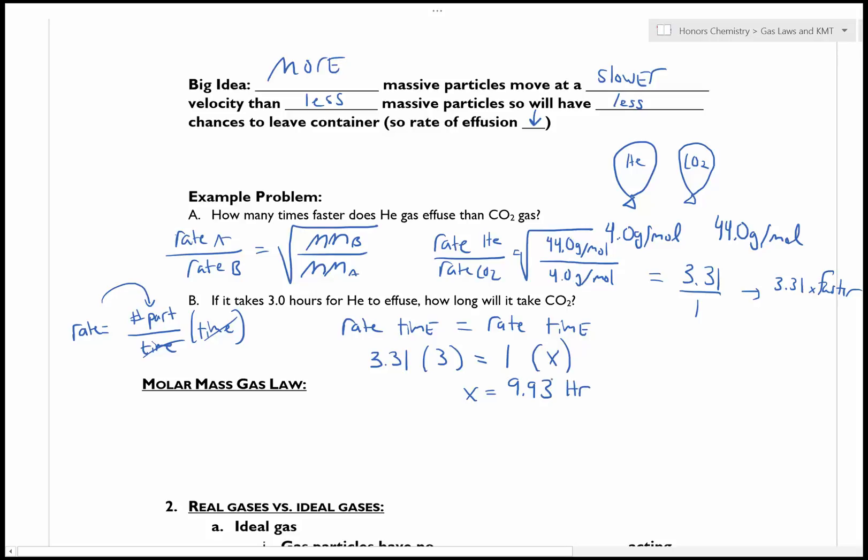So, it doesn't actually matter what unit of time we're looking at. Assuming that both balloons are getting rid of the same amount of particles, that rate times time is actually going to give me a number of particles. And so I can actually set them equal to each other because the number of particles is the same for each. So, 9.93 hours when I go back to this answer makes conceptual sense. Well, helium is a smaller gas so it should be faster than carbon dioxide.